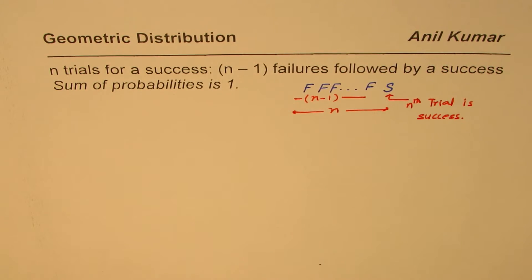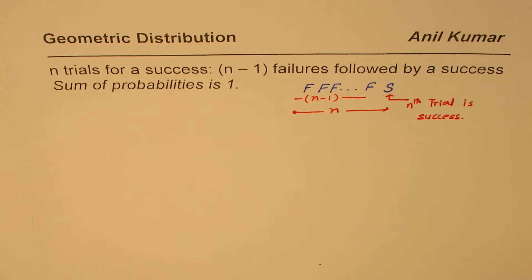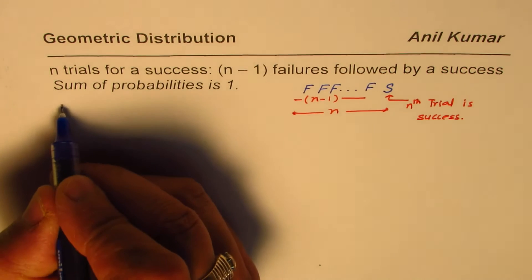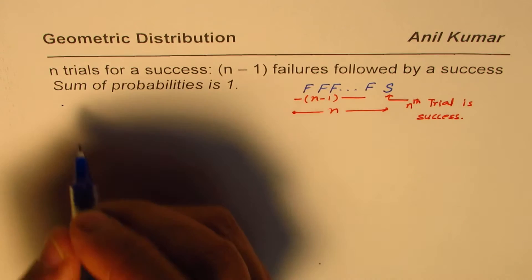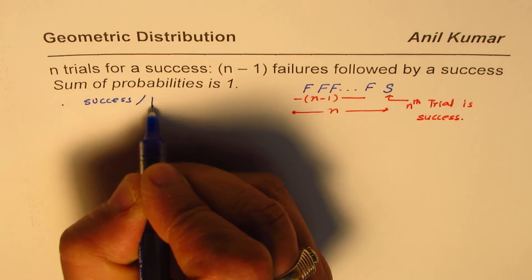So we are looking for probability in such cases. So we have n minus 1 failures followed by a success, and total number of trials is n. As you can very clearly see here, these are the n Bernoulli's trials, since we have only two outcomes, which are success or failure.